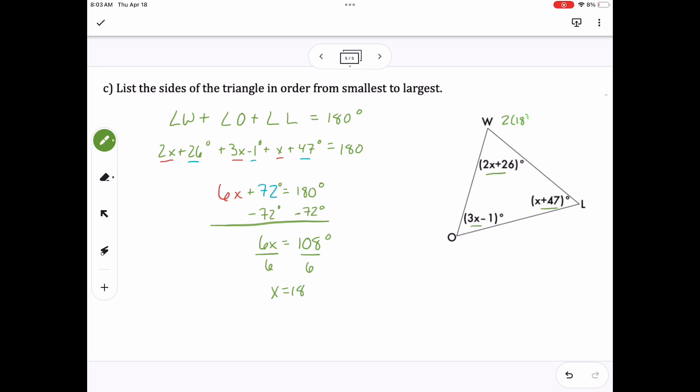And so now I want to go back to each angle individually and plug in what I know for X. And so that gives me 62 degrees for angle W, 65 for angle L, and for angle O, I get 53.